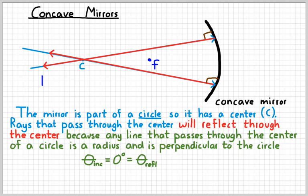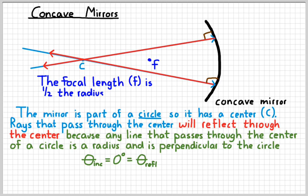The next big idea is that the focal length F is one-half the radius of curvature, which we denote with the same symbol as the center, C. So F equals one-half the radius of our mirror.